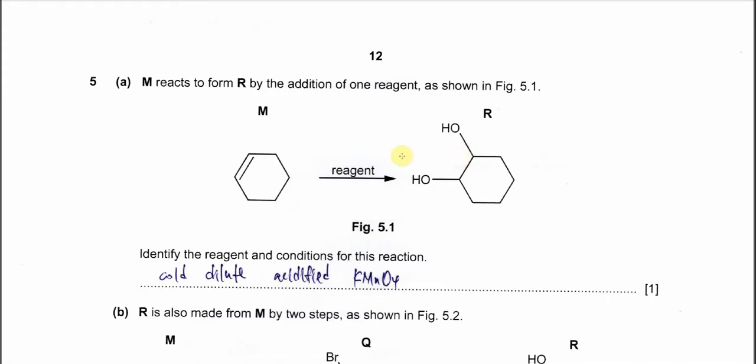Question 5a. M reacts to form R by addition of one reagent as shown in figure 5.1. Identify the reagents and conditions for this reaction.